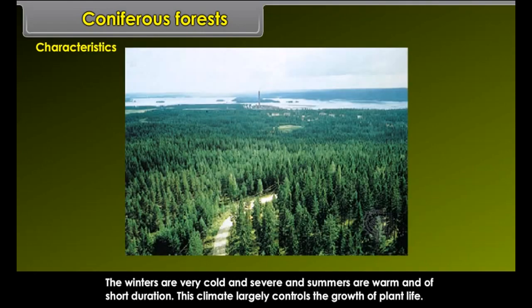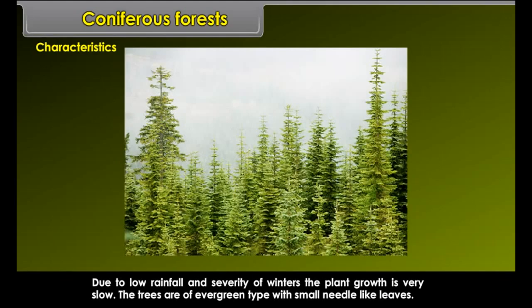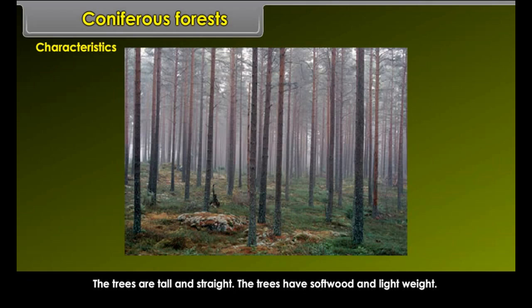Characteristics. The winters are very cold and severe, and summers are warm and of short duration. This climate largely controls the growth of plant life. Due to low rainfall and severity of winters, the plant growth is very slow. The trees are of evergreen type with small needle-like leaves. The trees are tall, straight, and have soft wood and light weight.